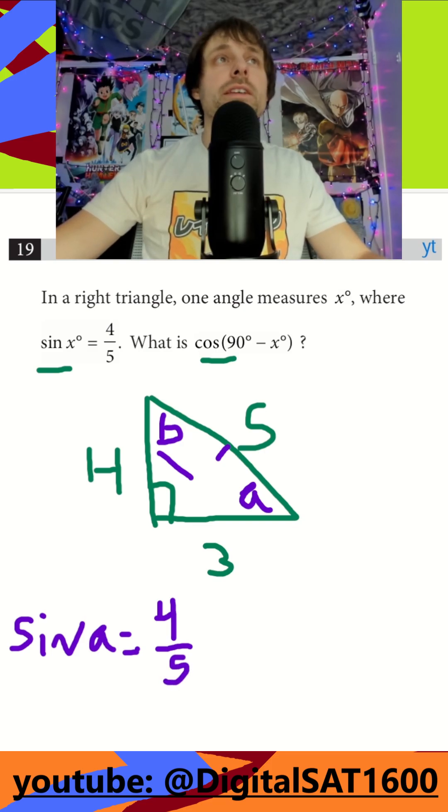And then I say, okay, what about the cosine of B, right? The cosine of my complementary angle, and that's going to be my adjacent over my hypotenuse, which is also going to be equal to 4 fifths.